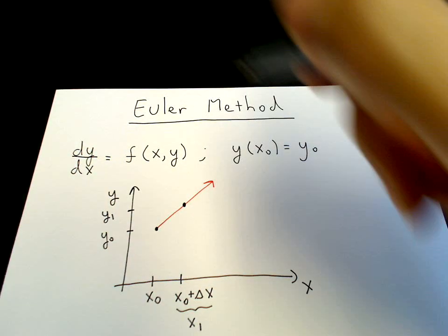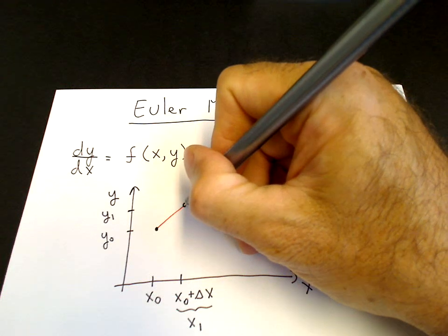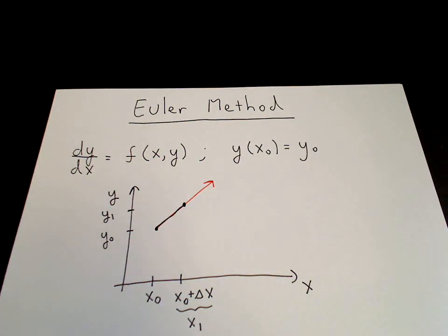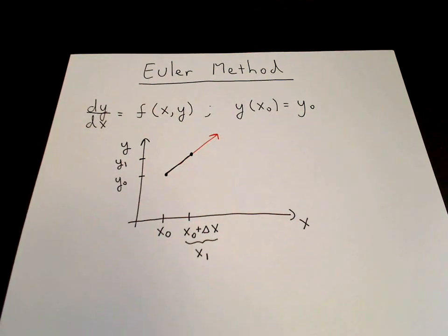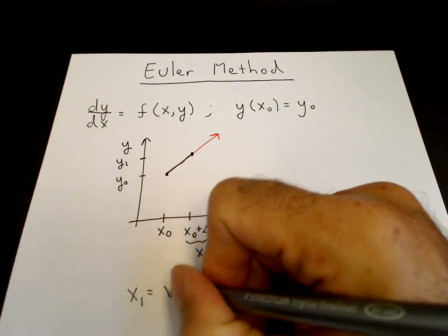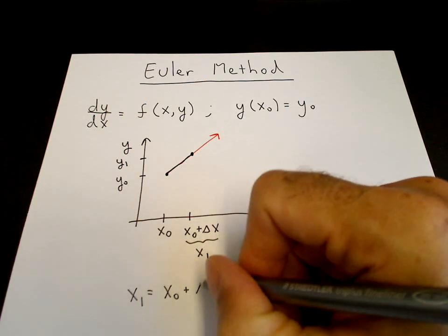which we can call y₁. And this line segment here will be an approximation to the solution of y equals y of x between x equals x₀ and x plus Δx. So what is y₁?